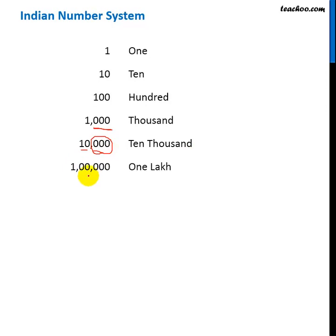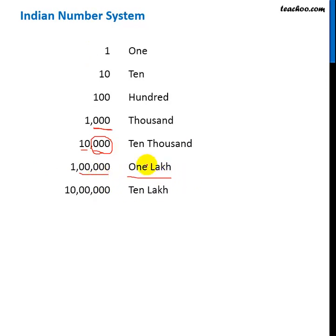Now with 5 zeros, in the Indian system we use 1 lakh. So 5 zeros mean 1 lakh. Now 6 zeros will be 10 and then 5 zeros — that is 10 lakhs.